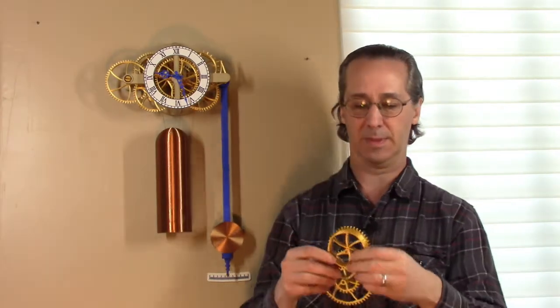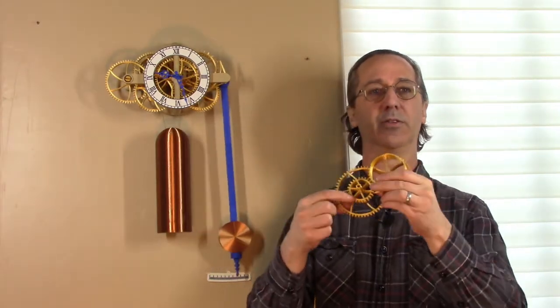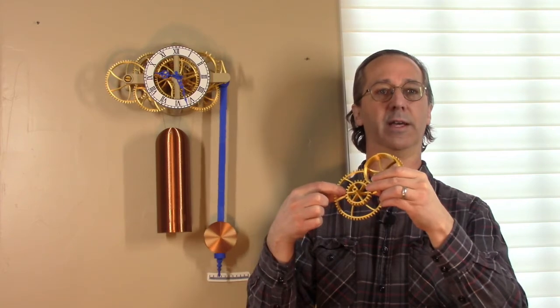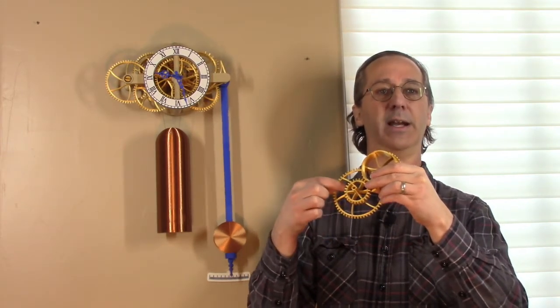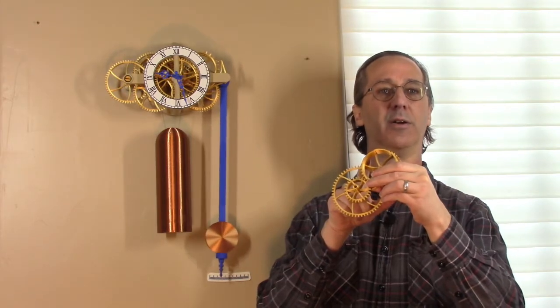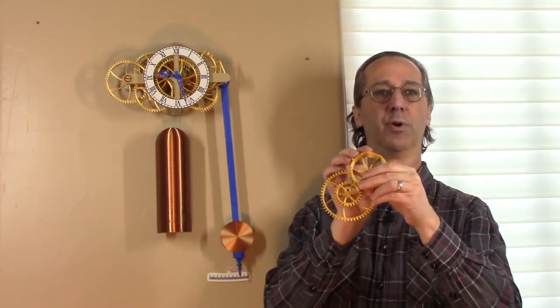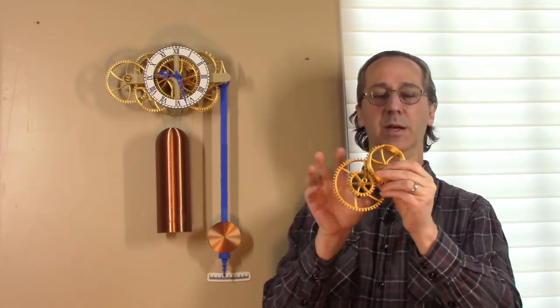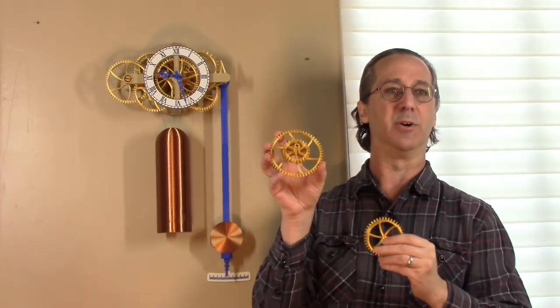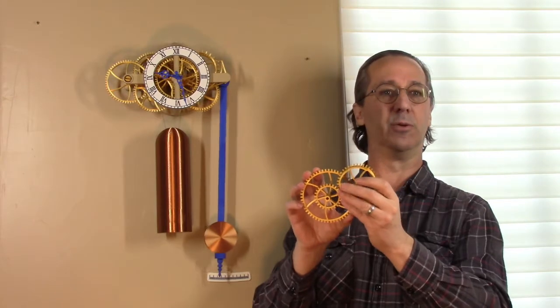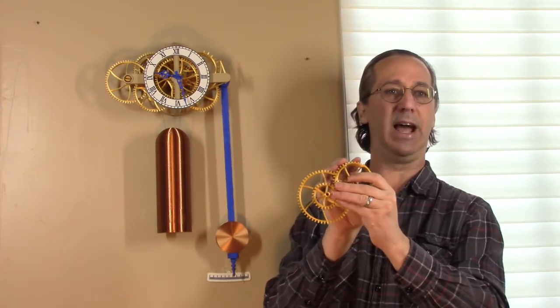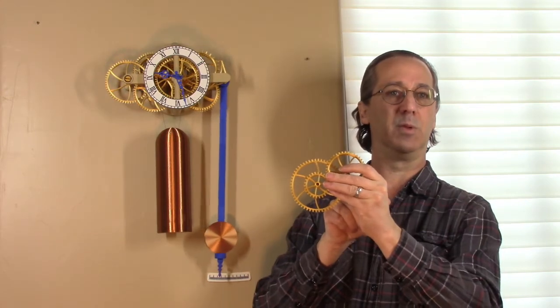This is the gear ratio for the seven and a half day mode: a very large minute hand arbor and a much smaller ratchet. The minute hand arbor rotates once per hour. This gear ratio is probably one and a half to one, so the ratchet will rotate in about one and a half hours.